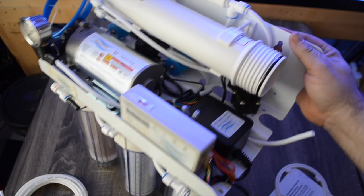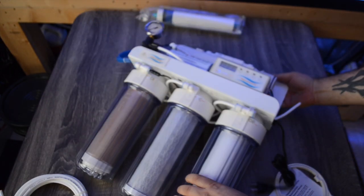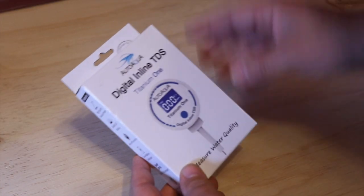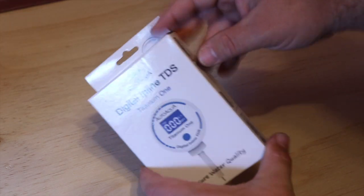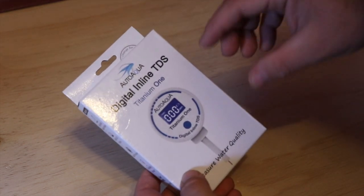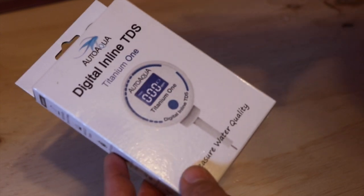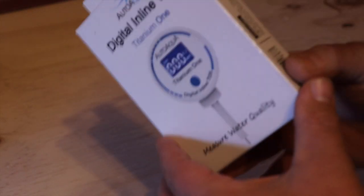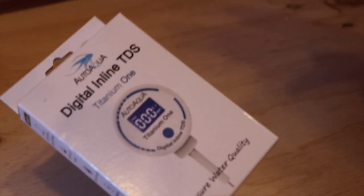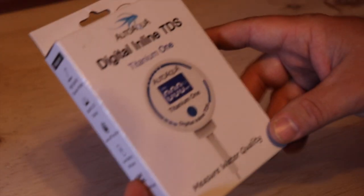We have the Auto Aqua digital inline TDS meter, this is the titanium one. A couple things about this product before we open it up and take a look at it: this is a product that I have featured on a number of top 10 product videos, the must-haves of reef keeping. There's going to be links to those in the show notes if you guys want to check those out. This has been featured one or two times.